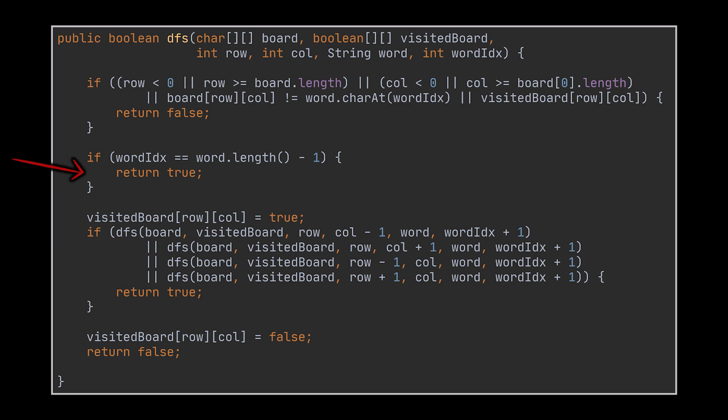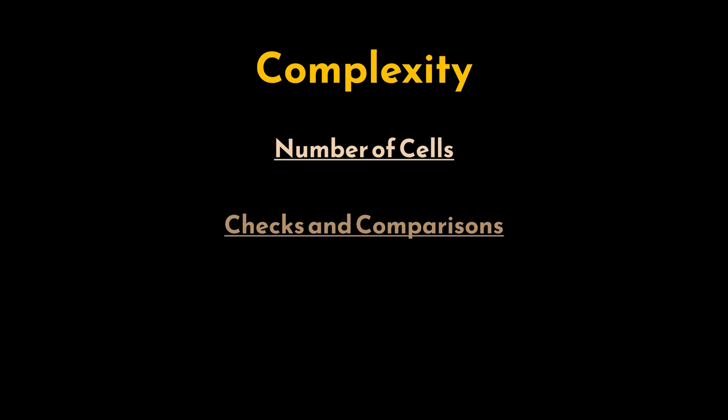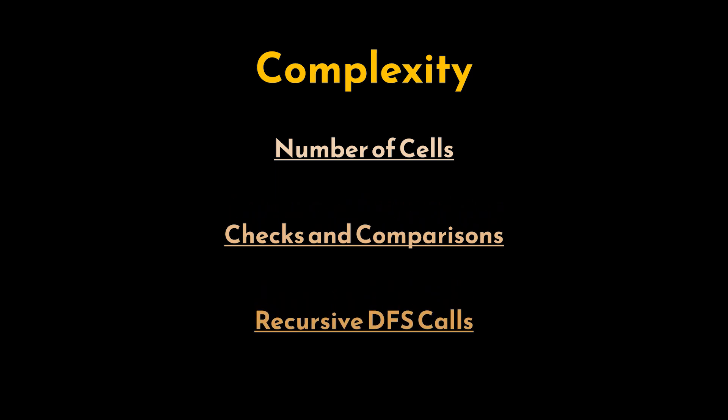And that's it. Now concerning the complexity of this algorithm, it can be divided into three categories: the number of cells traversed, the checks and comparisons done, and the DFS recursive calls.